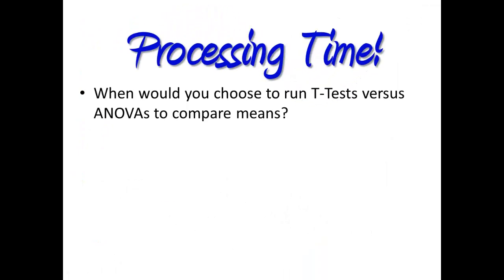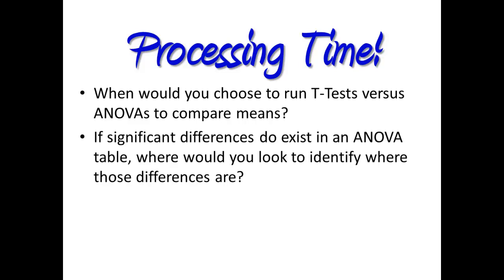Processing time. When would you choose to run T-tests versus ANOVAs to compare means? If significant differences do exist in an ANOVA table, where would you look to identify where those differences are?